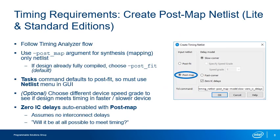Follow the Timing Analyzer flow discussed earlier, starting with the creation of the Timing Netlist. When generating the Timing Netlist, use the -post-map argument to use the post-synthesis netlist if the design has only been synthesized and not fully compiled. To do this, either use the Create Timing Netlist command with the -post-map argument in the console, or use the GUI and select post-map as the input netlist type as shown here. If you have already performed a full compilation, use the default post-fit netlist type.